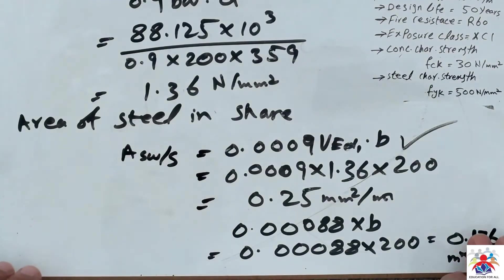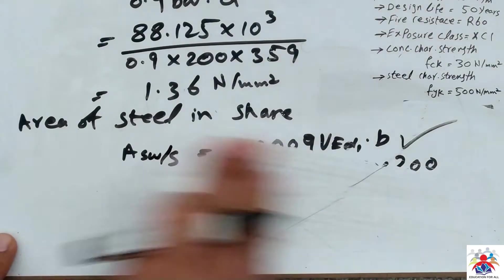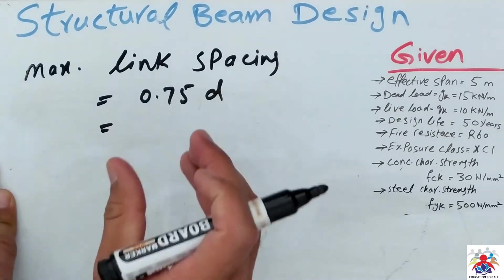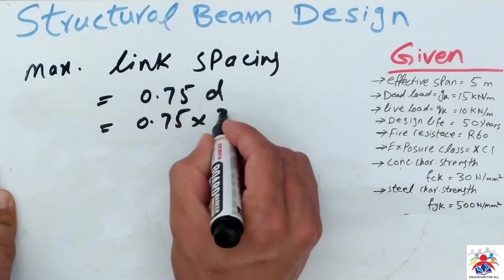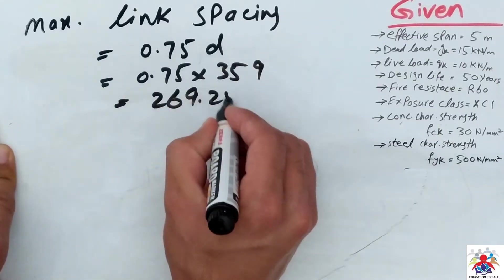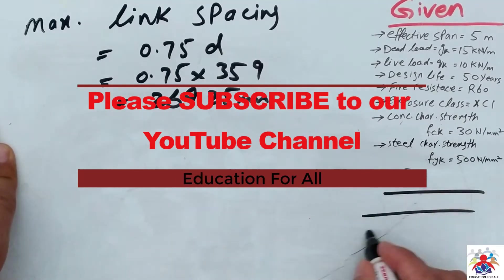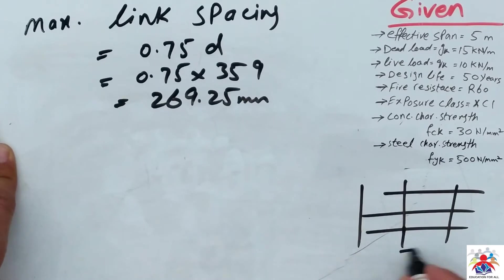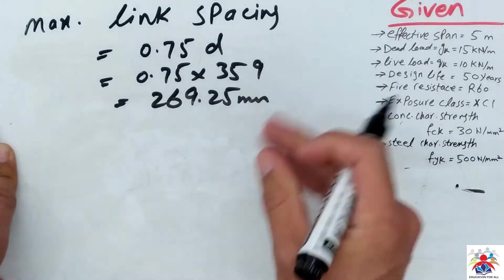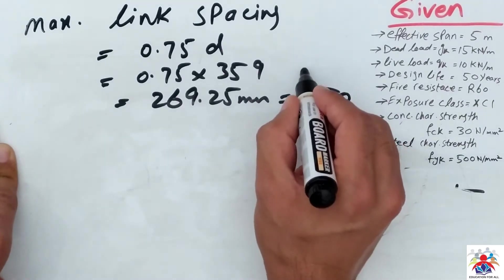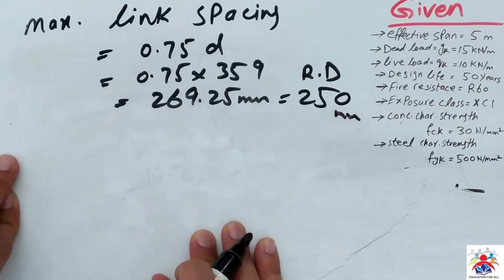Now we check the link spacing in our beam. The formula for maximum link spacing is 0.75d — this is a standard formula we must remain within. Using depth 359 mm, we get 0.75 × 359 = 269.25 mm. We round this down to 250 mm link spacing.